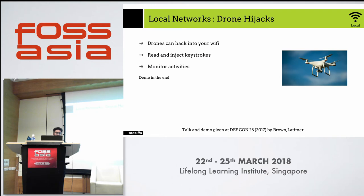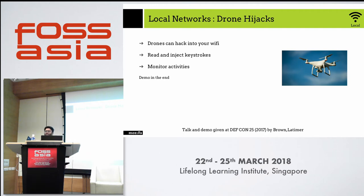Moving on to local network attacks — here's an example of drone hijacking. What we did: we used a drone, mounted a Raspberry Pi Zero on it with Kali Linux installed, and it was capturing the Wi-Fi sessions of a router connected to a hostel where we lived. We made it take a round of the whole hostel, all the blocks, and it captured the session data of all the students — what activities they were doing. This is how you can mess with your neighbors using smart devices on the local network.